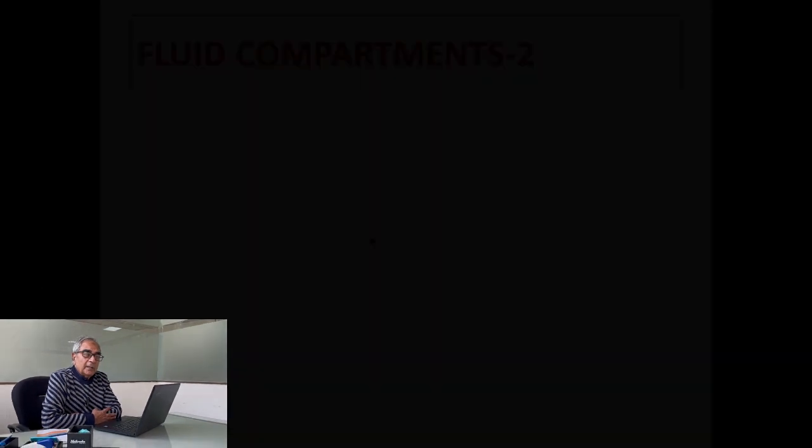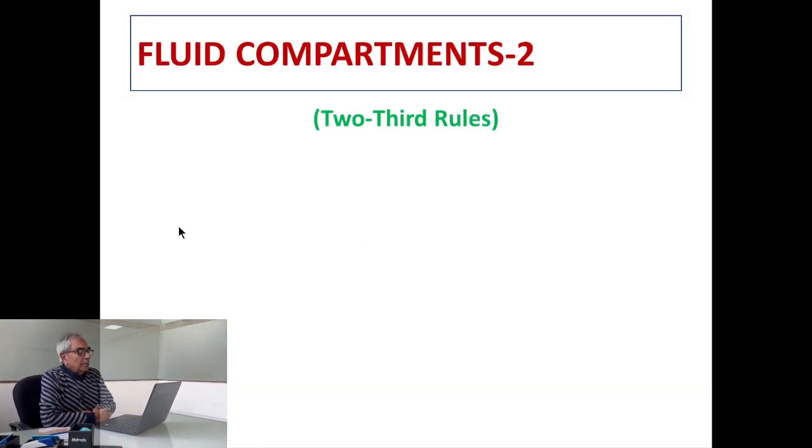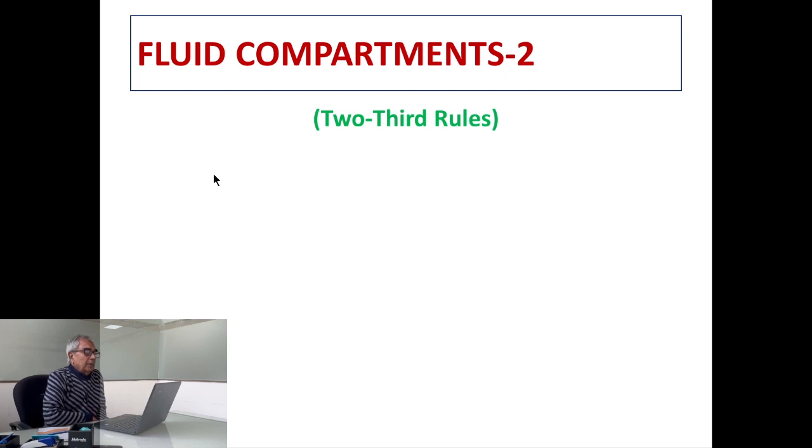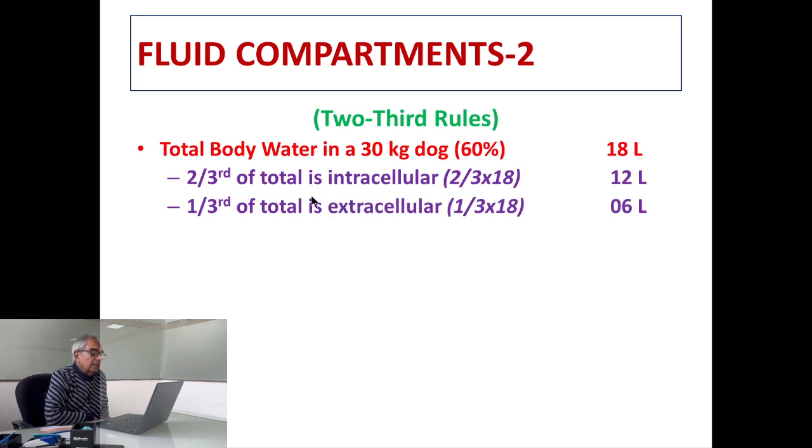The other rule which we can follow to define the intracellular and extracellular fluids is the two-third rule. In the two-third rule, total body water in a 30 kg dog is 18 liters. Two-third of the total body water is intracellular, that comes to about 12 liters, and one-third is extracellular which comes to about 6 liters.